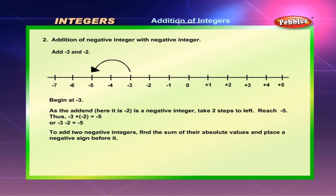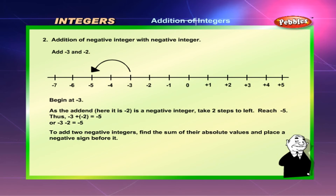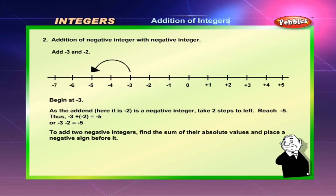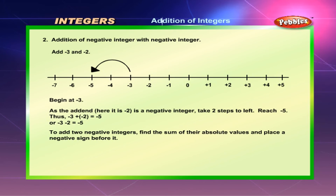Addition of negative integer with negative integer. Add minus 3 and minus 2. Begin at minus 3. As the addend is a negative integer, take two steps to the left. Reach minus 5. Thus, minus 3 plus minus 2 is equal to minus 5, or minus 3 minus 2 is equal to minus 5. To add two negative integers, find the sum of their absolute values and place a negative sign before it.